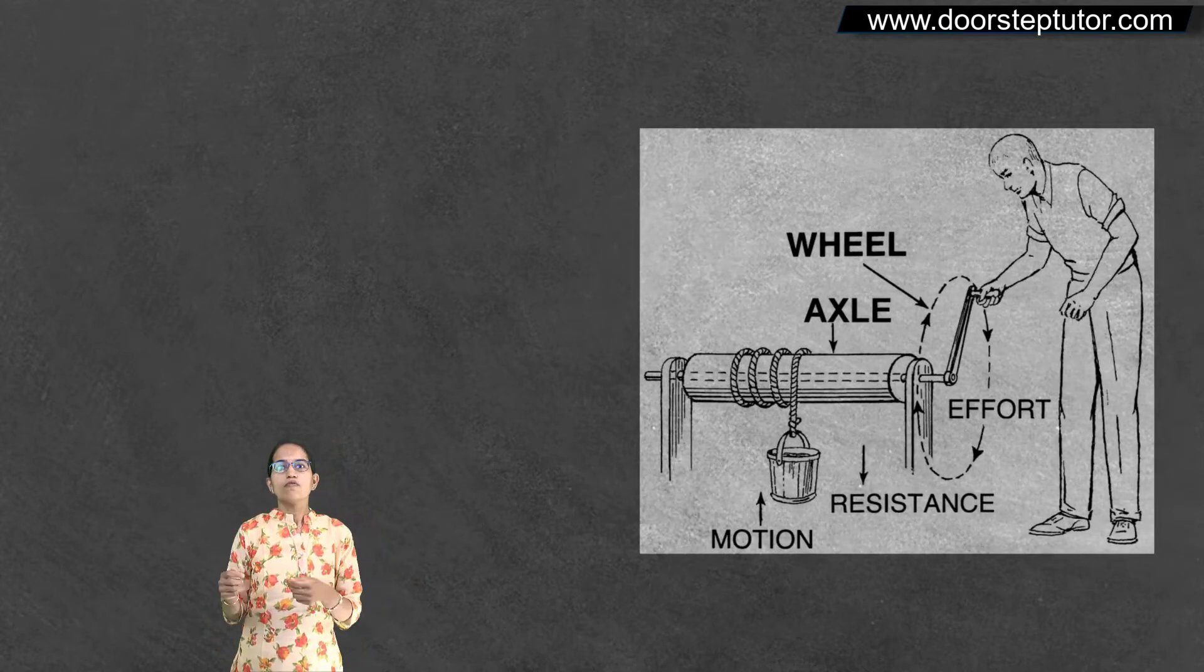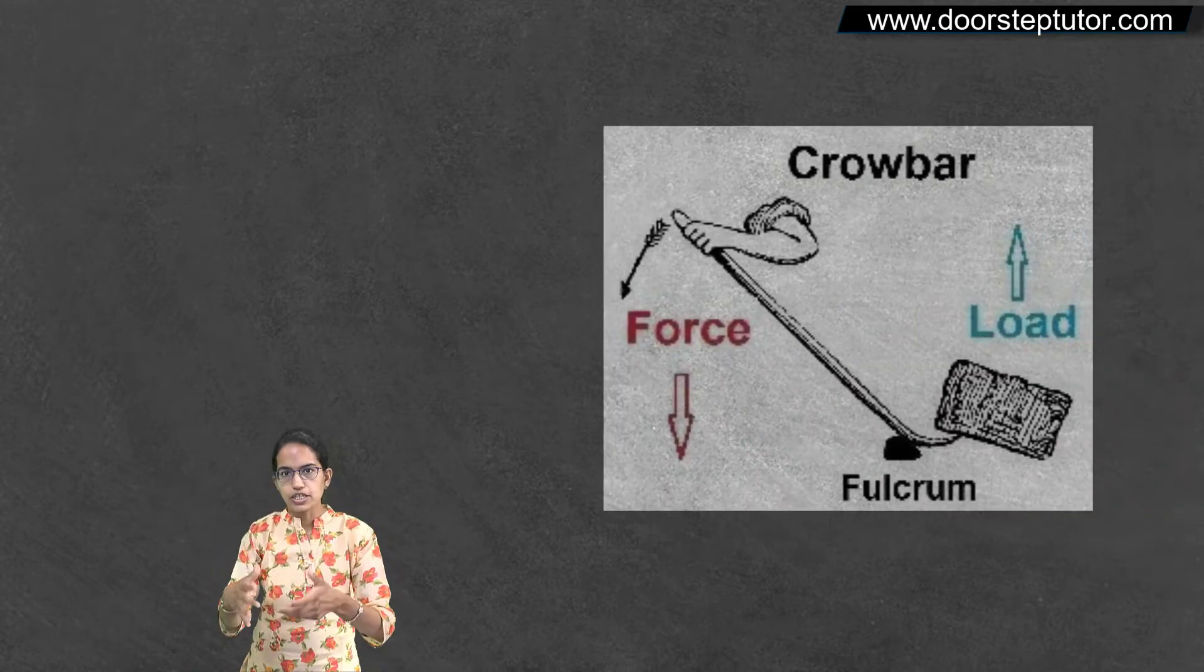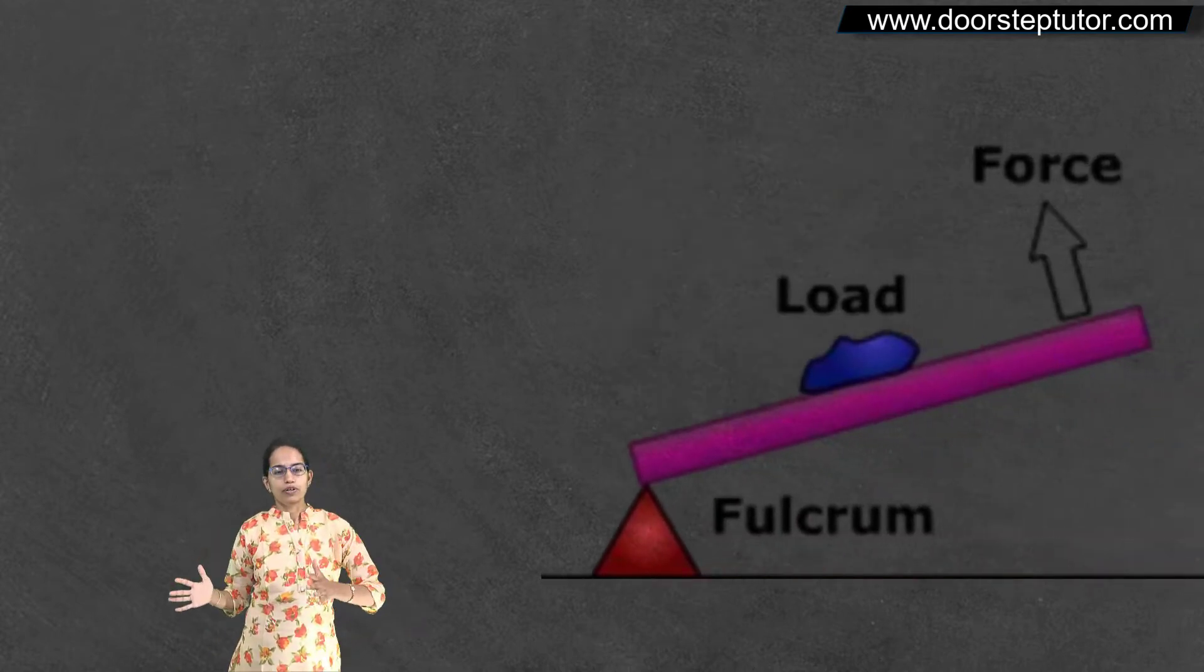Another good example could be wheel and axle. Another good example could be crowbar which I am pushing with my hand. The next case is class 2 lever.